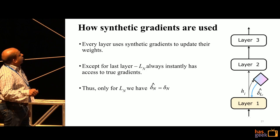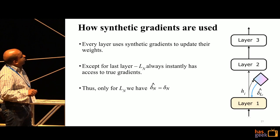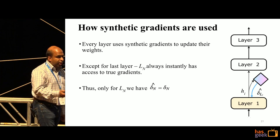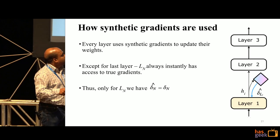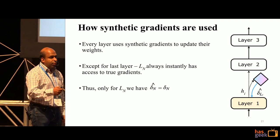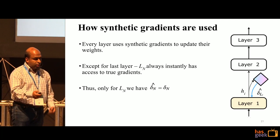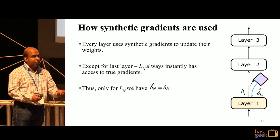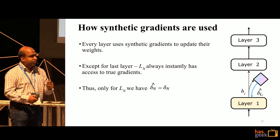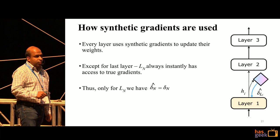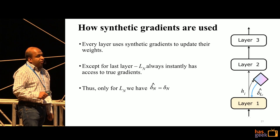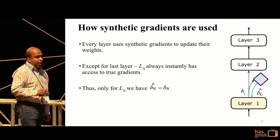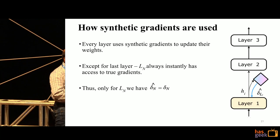Each layer uses the synthetic gradients to update their weights, barring the last layer. The last layer produces the output, compares it against the actual truth, and can continuously get the real gradient. So it's only at the last layer that the synthetic gradient equals the actual gradient. All other layers work with synthetic gradients — there is no actual gradient available to them.